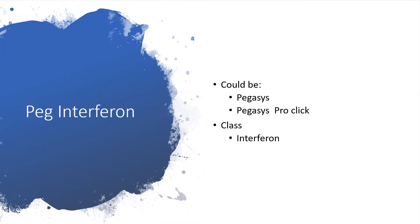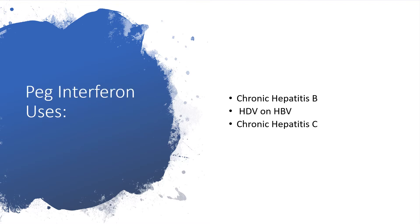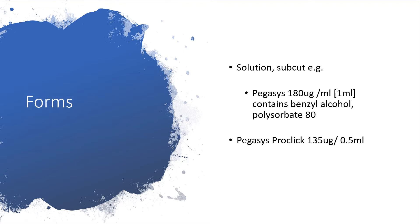PEGylated interferon could be Pegasys. Pegasys is a pro-click formulation and it belongs to the class of medications known as interferons. PEGylated interferon is useful in chronic hepatitis B, hepatitis D, and also chronic hepatitis C. It appears as a solution given subcutaneously — for example, Pegasys 180 micrograms per mL. The pro-click formulation is 135 micrograms per 0.5 mL, containing benzyl alcohol and polysorbate 80.